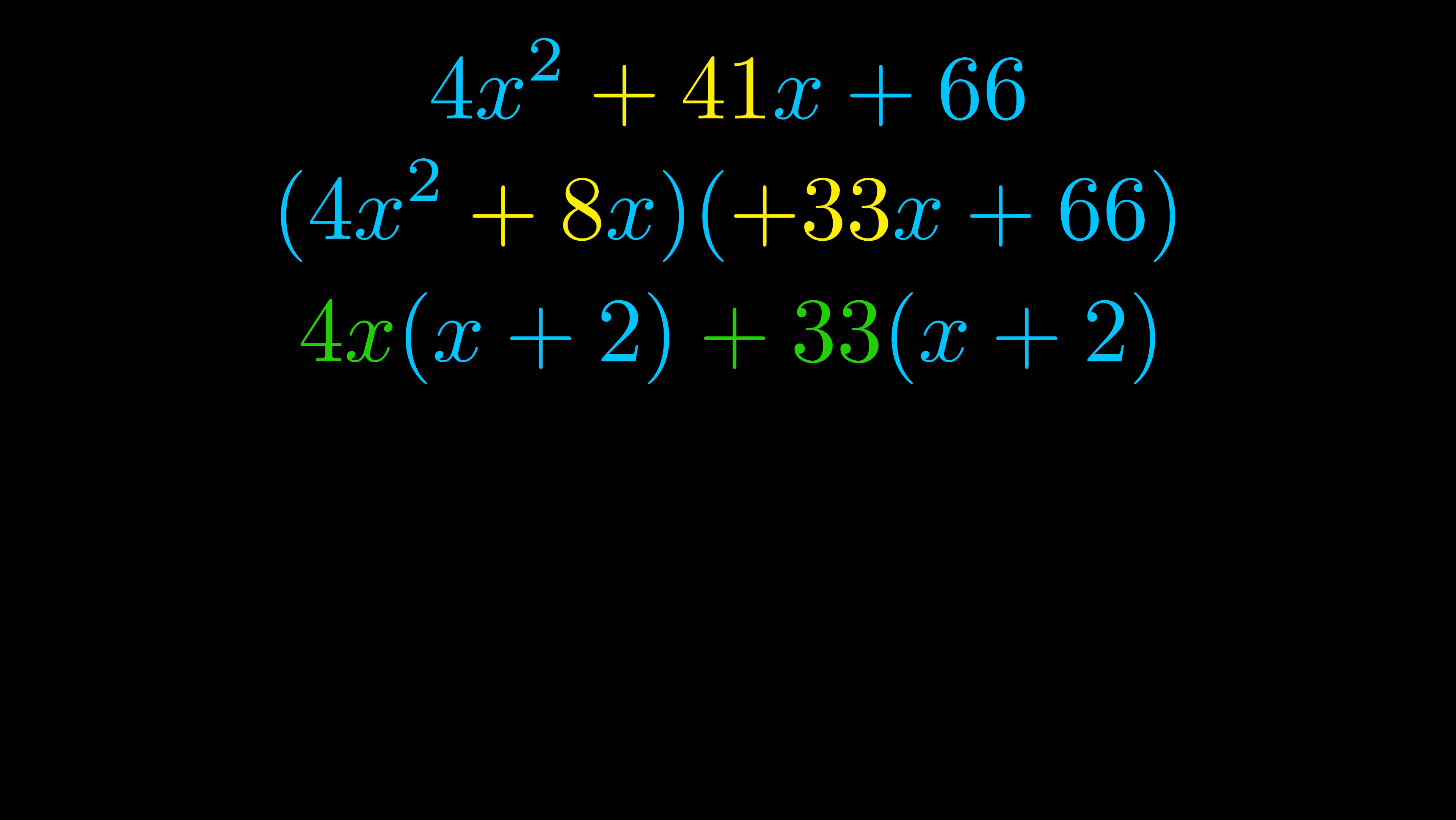Notice also how what remains inside of the parentheses is the same in both cases. The blue values are the same. Those blue values will become one of our factors and we will combine the two green values the GCFs that we pulled out to get the other one. And that is our fully factored equation.